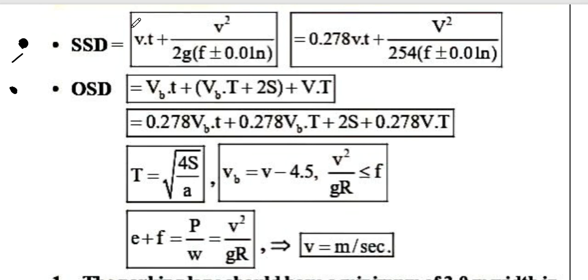Next, we talk about OSD (Overtaking Sight Distance). The formula is VBT + VBT + 2S + V×T. The reaction time for OSD is 2 seconds, and for SSD it is 2.5 seconds. This is an important point likely to be examined.